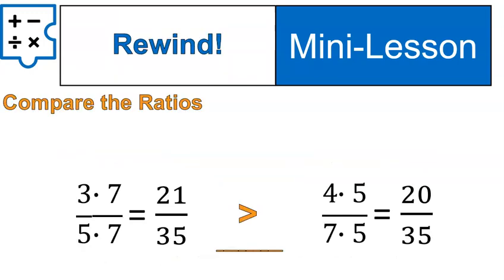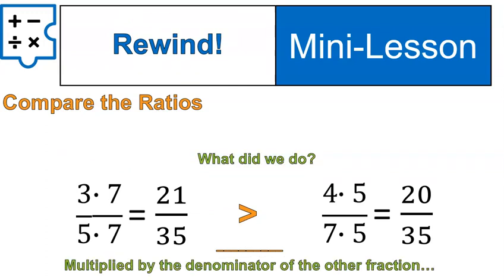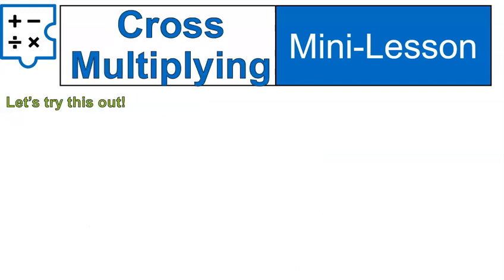Now, rewind back to our previous example with comparing ratios and ask ourselves, what are we doing here? Well, we're multiplying by the denominator of the other fraction. Hmm. We're basically doing cross-multiplying. All right? That's all we're doing, cross-multiplying. So, yes, let's use cross-multiplying to compare fractions. This is how it would look. Let's try it out.